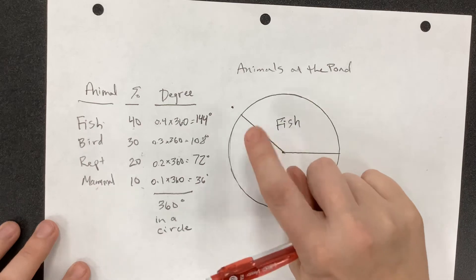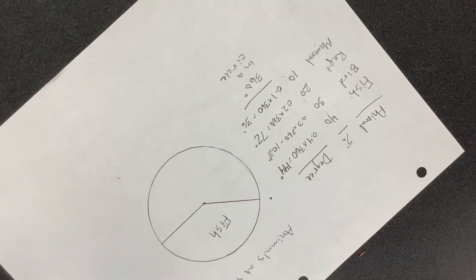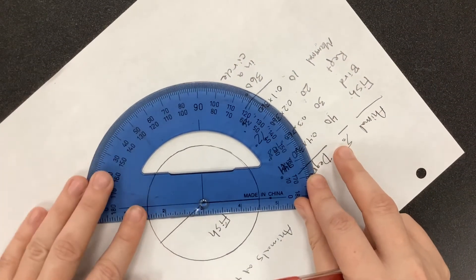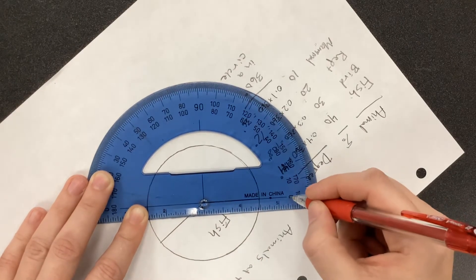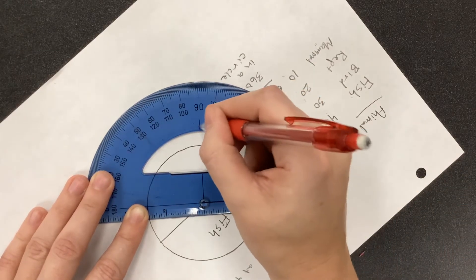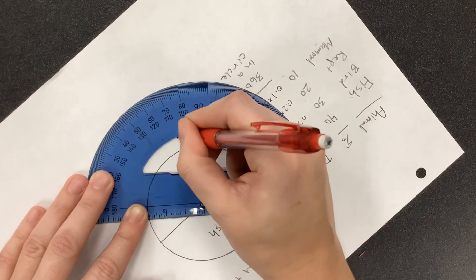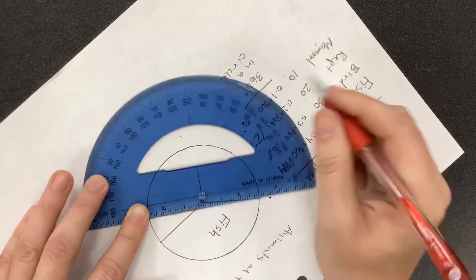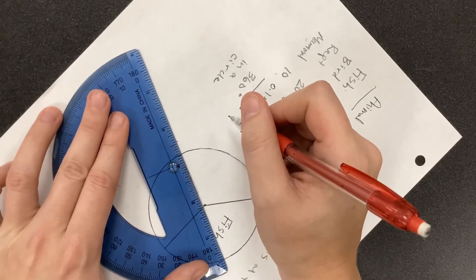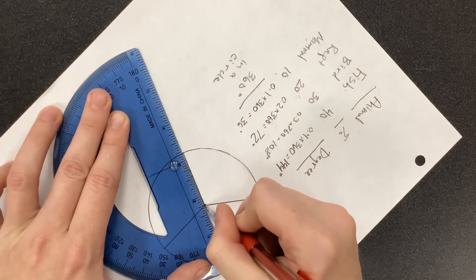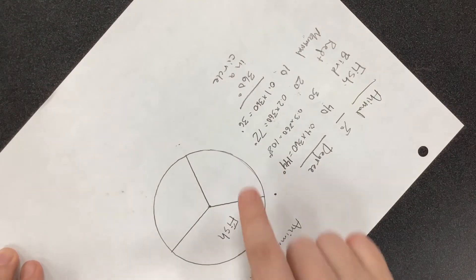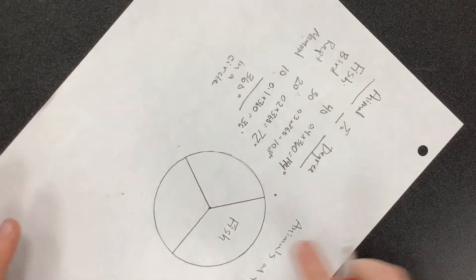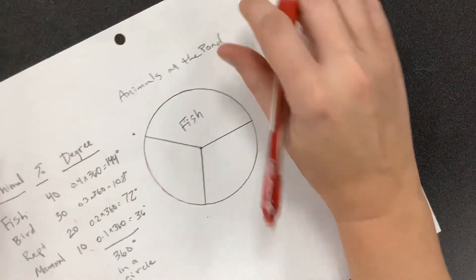To make the next pie piece, my new line has become my baseline. Line the center up with the dot, and line the new line up with 0. Now I want to go 108 degrees. 0 to 90 is right in the middle, then 100, and 110 is here. So 108 is a little bit inside of that — right there. Line the two dots up and draw a line. This is 30%. If the fish piece is 40%, then everything left is 60%, so these two should be about equal — and they are. This is birds.